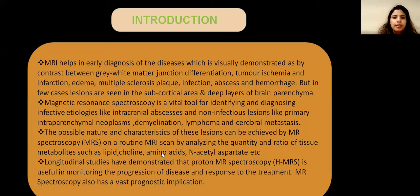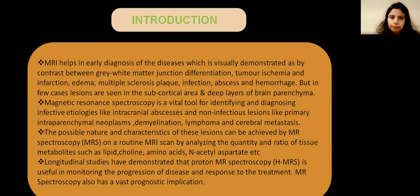Introduction. MRI aids in early diagnosis of diseases, visually demonstrated by contrast between gray-white matter junction differentiation, tumor ischemia, infarction, edema, multiple sclerosis plaque, infection, abscess, and hemorrhage. But in few cases, lesions are seen in the subcortical area and deep layers of brain parenchyma.